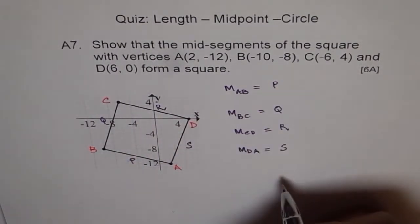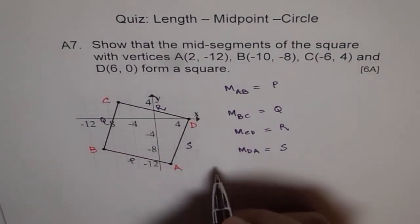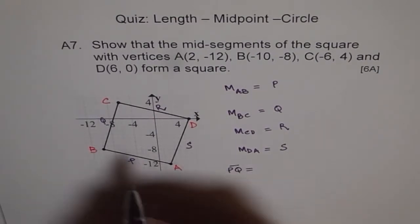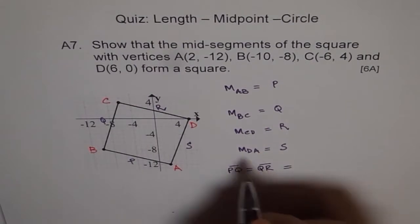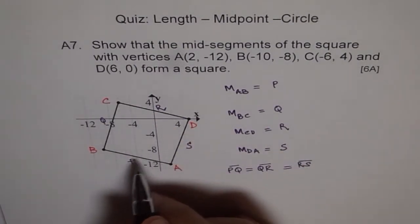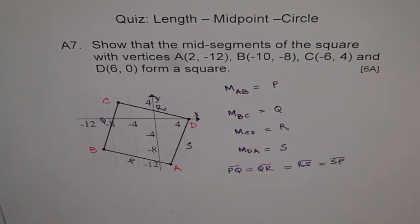Now what you need to do: after finding the midpoints, you have to show that PQ equals QR equals RS equals SP. This is what you need to do.